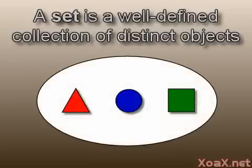For example, this diagram depicts a set with a triangle, a circle, and a square in it. Often we will use such diagrams to represent sets or collections of objects.